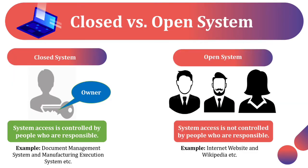Closed System vs. Open System. A Closed System is one where access is controlled by the people responsible — examples include Document Management Systems and Manufacturing Execution Systems. An Open System is one where access is not controlled by the people responsible — examples include Internet websites and Wikipedia.